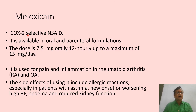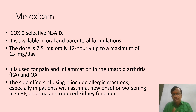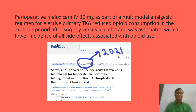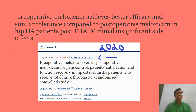Meloxicam is a COX-2 preferential inhibitor available as 7.5 mg orally, used for rheumatoid arthritis and osteoarthritis. Because of its preferential COX-2 selectivity, it is slightly preferred in patients with comorbidities. A 2021 study showed 30 mg IV meloxicam in total knee replacement reduced opioid consumption. A 2020 study showed better efficacy after total hip replacement with very insignificant side effects.